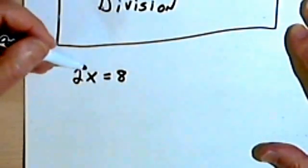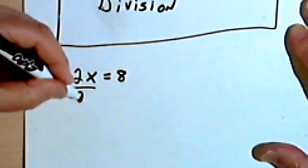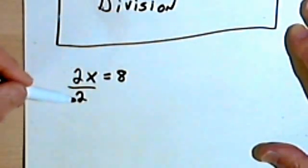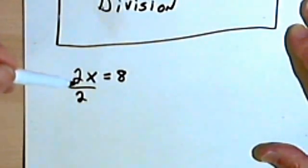Since the x was multiplied by 2, we can get rid of that 2 by dividing by 2. In other words, division undoes multiplication. If we divide one side of an equation by a number, we have to divide the other side by the same number.